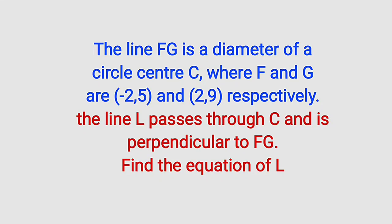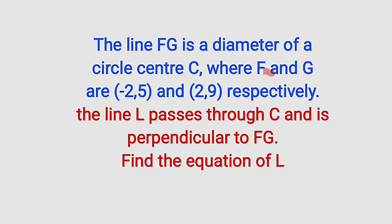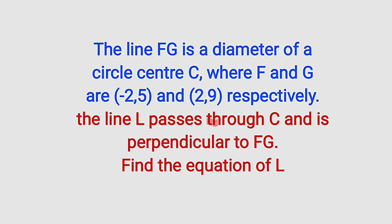Hello good dear viewers, still on coordinate geometry. Here is our problem for today. The line FG is a diameter of a circle center C, where F and G are (-2,5) and (2,9) respectively. The line L passes through the center and is perpendicular to the line FG. We are asked to find the equation of the line L.